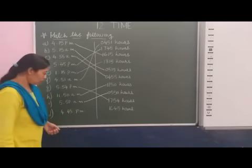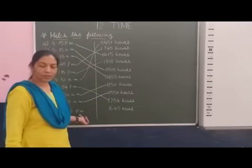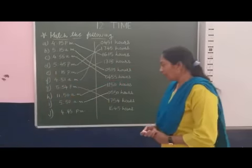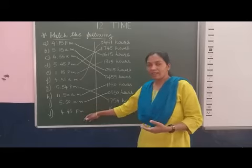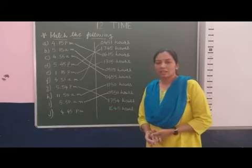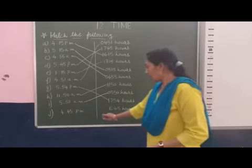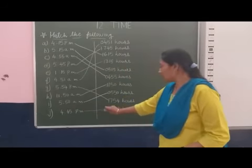And last is 4:45 PM. So PM, that means post-meridian time. So we add here, 4 plus 12 equals 16:45. So we match this time.